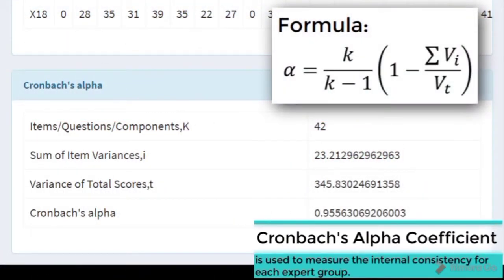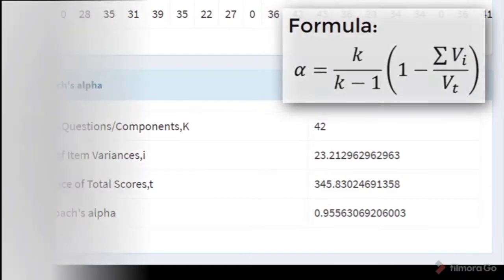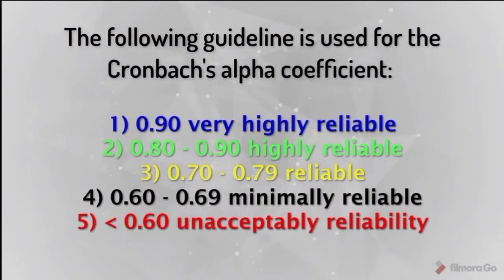On top of that, Cronbach's alpha coefficient is used to measure the internal consistency for each expert group based on the following guideline.